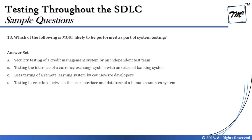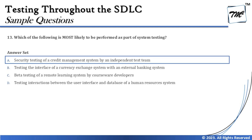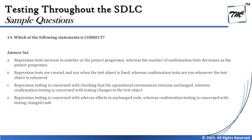The correct answer for Question 13 is Option A — security testing of a credit management system by an independent testing team. System testing is always independent testing, not performed by developers. Pay attention to each word when reading exam options, highlighting key terms to distinguish the correct answer.